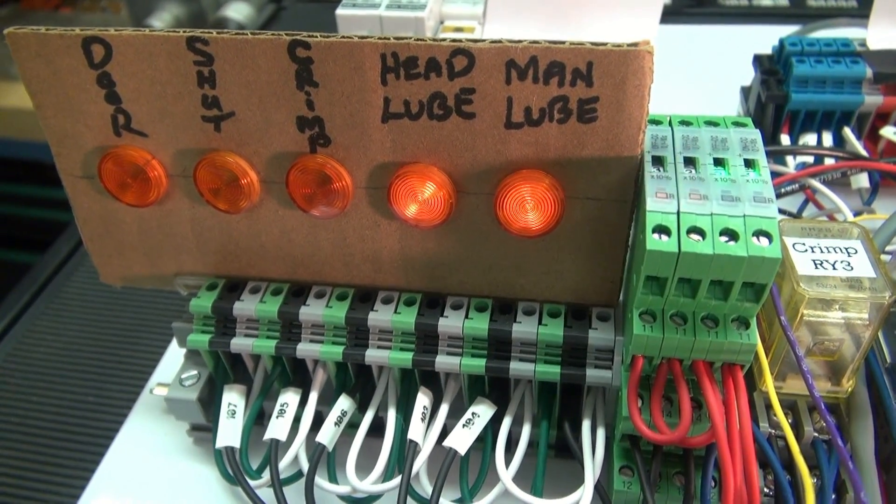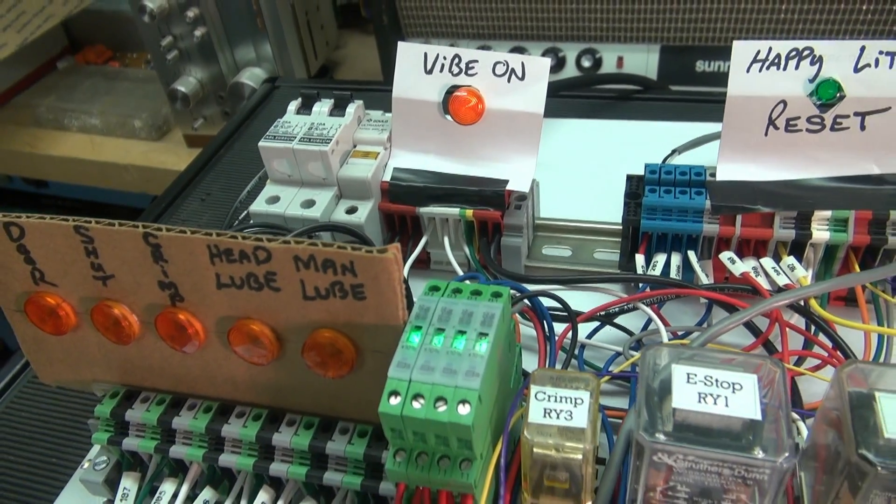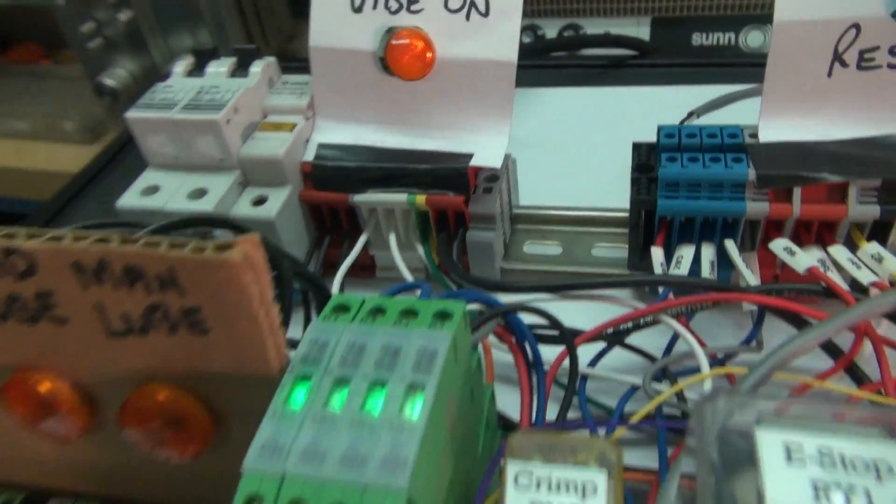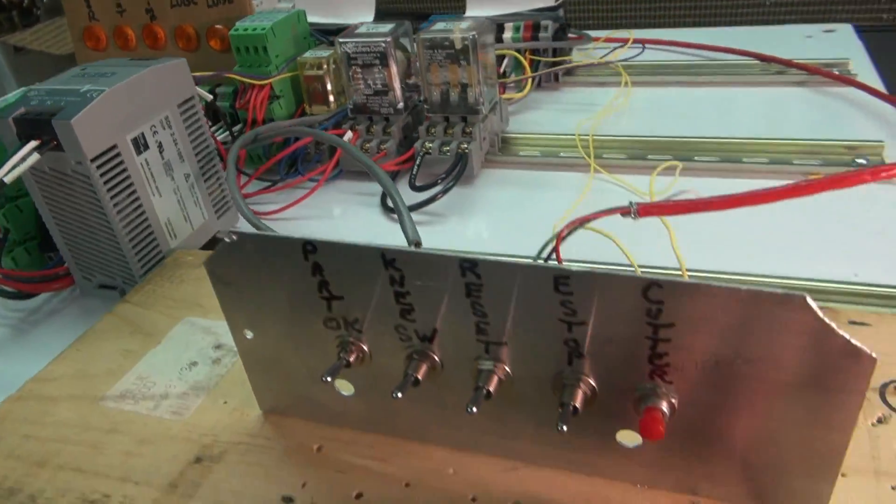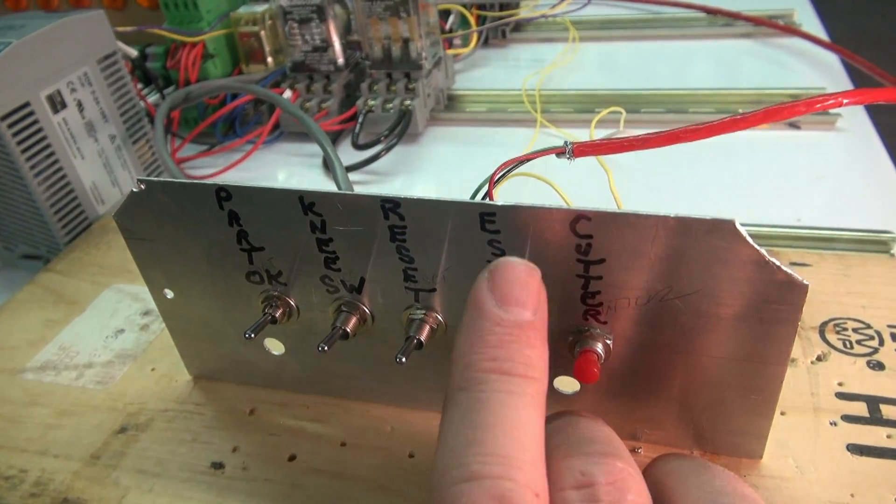Lube stay on. Boom. Go off. So we're making hoses. Everything's wonderful. We've got our happy light on. Vibes on. All of a sudden something goes wrong. So the operator says oh I better hit the e-stop. He hit the e-stop.